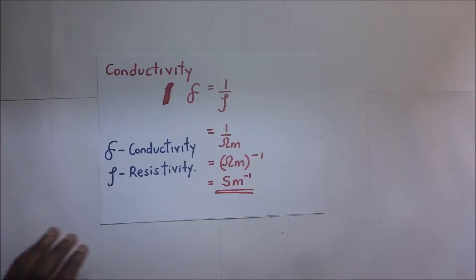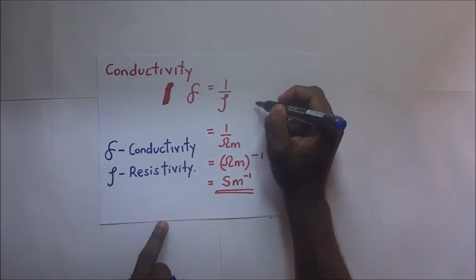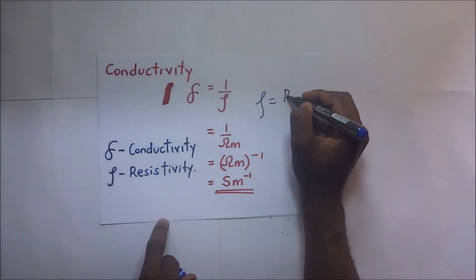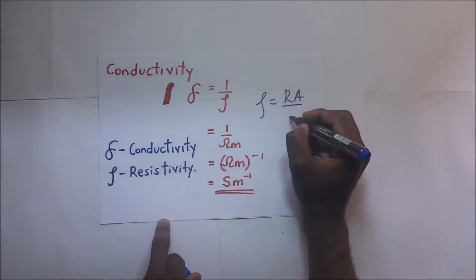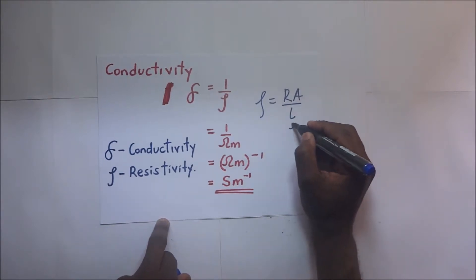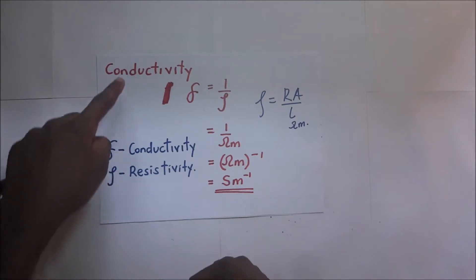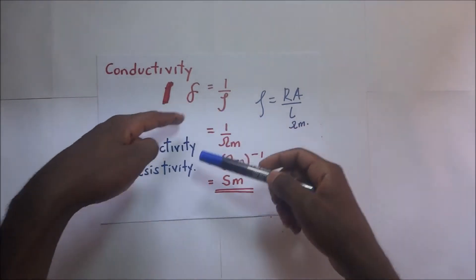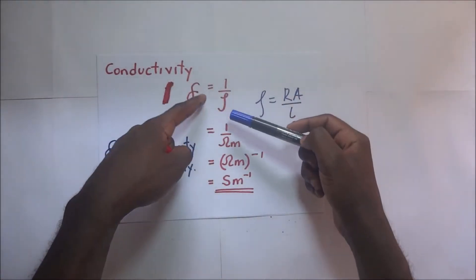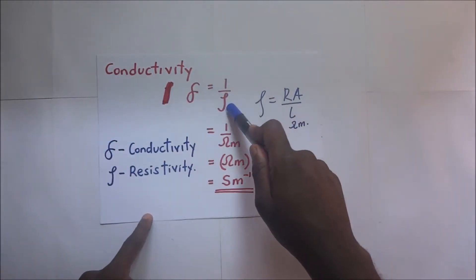Likewise, conductivity is the reverse of resistivity. We all know that resistivity is given by resistance times area over length, and the SI unit for resistivity is the ohm meter. So if we want to find conductivity, conductivity is simply the reverse of resistivity. We flip it, so conductivity is one over resistivity.